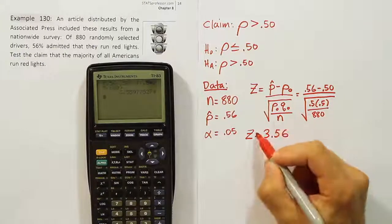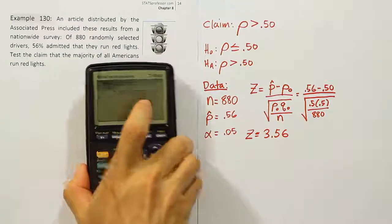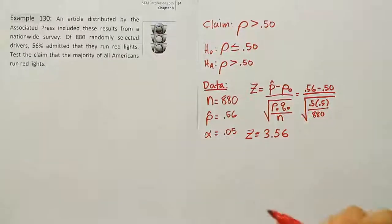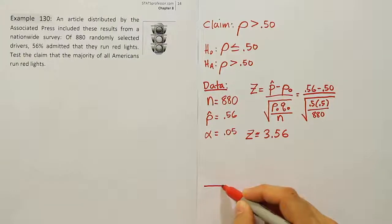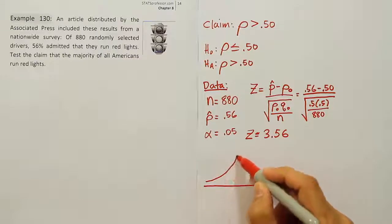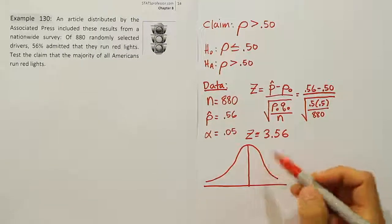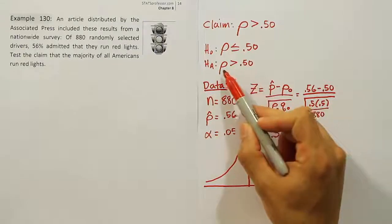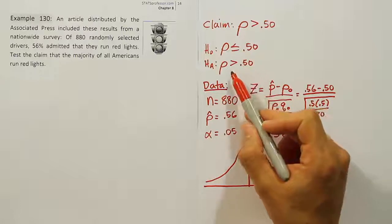So z ≈ 3.56. Once you have the test statistic, the next step is to draw a bell curve and place a critical value on it. We look at HA to determine whether it's one-tailed or two-tailed, and if one-tailed, whether it's left or right. Looking at the greater than symbol, this is a right-tailed test.